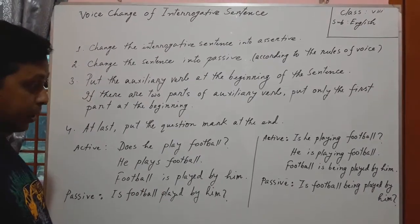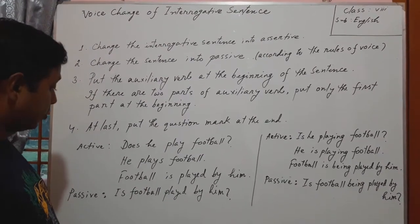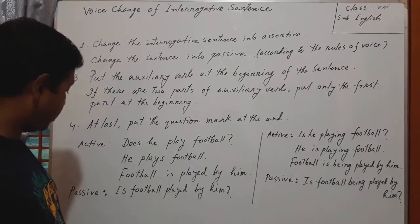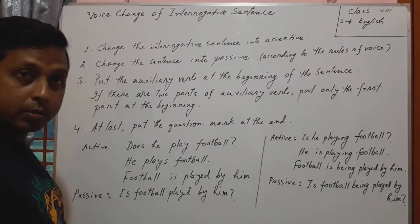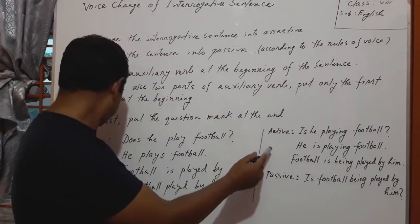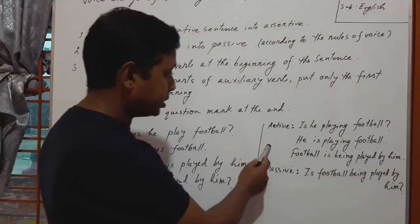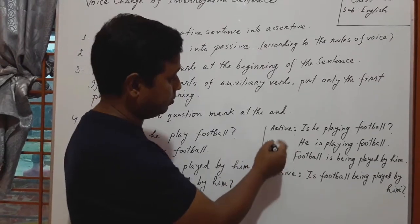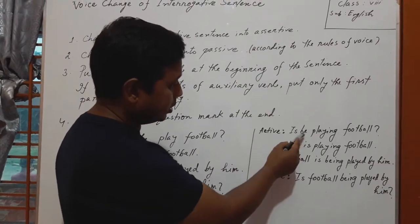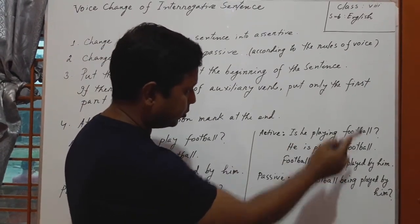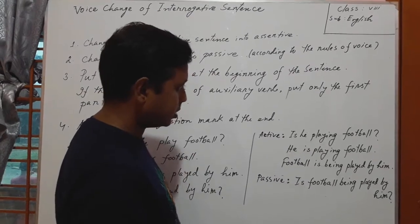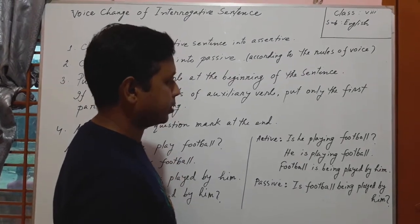If we find two parts of an auxiliary verb, then what can we do? See this example. Active: 'Is he playing football?' It is an interrogative sentence.